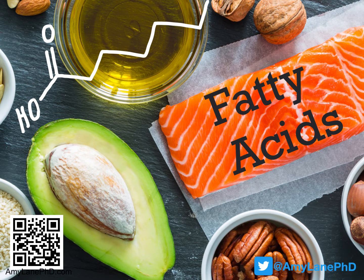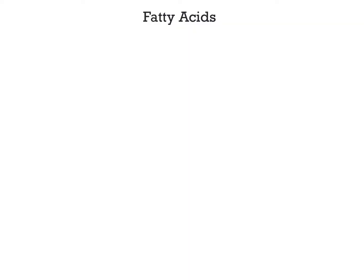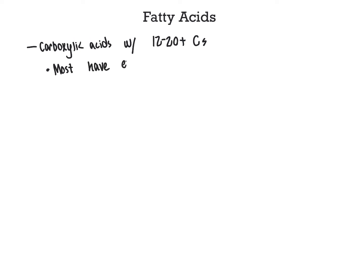Fatty acids are molecules that have a carboxylic acid group, COOH, with 12 to 20 carbon atoms, and sometimes even more than 20 carbon atoms in total within the structure. These molecules are generally found to have an even number of carbon atoms. This is because the building blocks that create fatty acids are built upon two carbons. One common building block is a molecule called acetyl-CoA, which donates two carbon atoms toward the structure. As a result, the structures have an even number of carbon atoms in total.